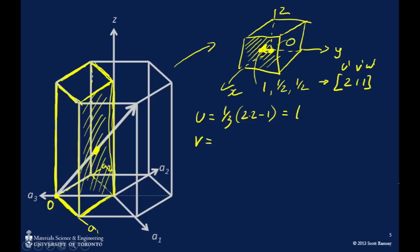And so u just becomes 1 third times 2 times 2 minus 1, which is equal to 4 minus 1, 3, so that's equal to 1. v is just equal to 1 third 2 minus 2, which is 0. t is the sum of those two, all made negative, so negative 1, and w is just w prime, which is 1. So there's no reductions necessary, that's already lowest integer values, so our four-index notation becomes 1, 0, 1 bar, 1. And that's our answer.